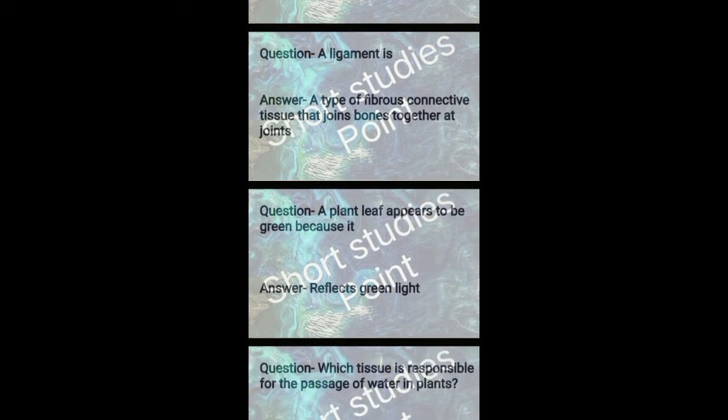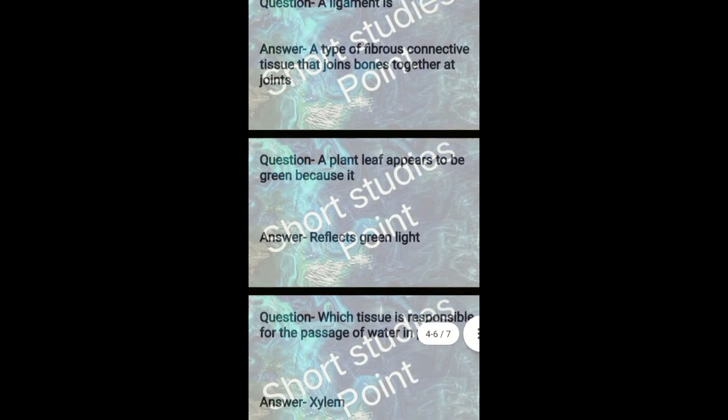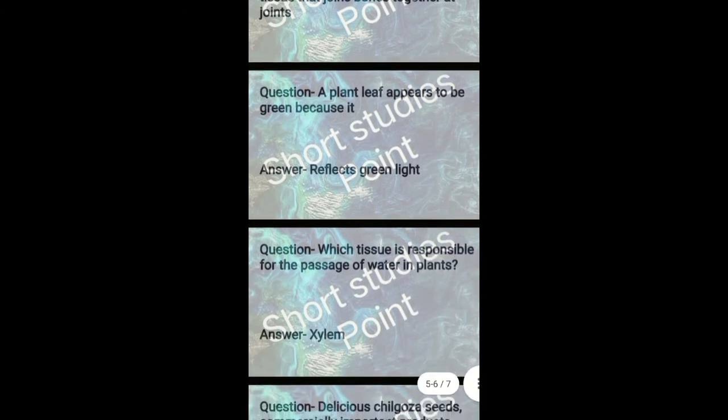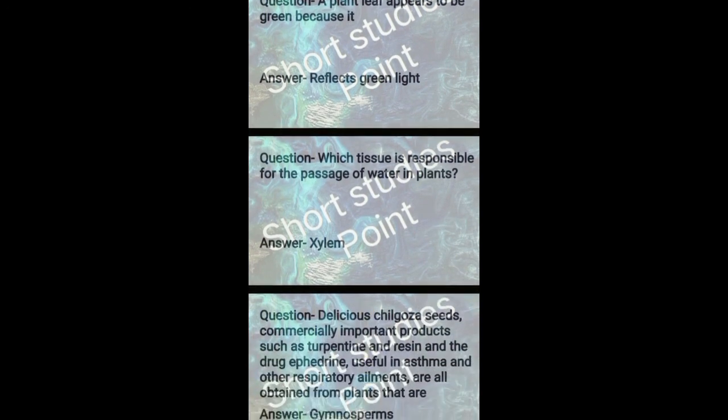Question: A plant leaf appears to be green because? Answer: It reflects green light. Next question: Which tissue is responsible for passage of water in plants? Answer: Xylem.